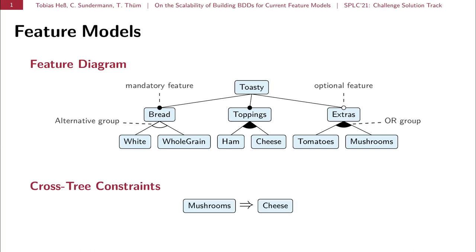In addition, we may specify cross-tree constraints. In this example, the selection of the feature mushrooms mandates the selection of the feature cheese in order to achieve a valid configuration.